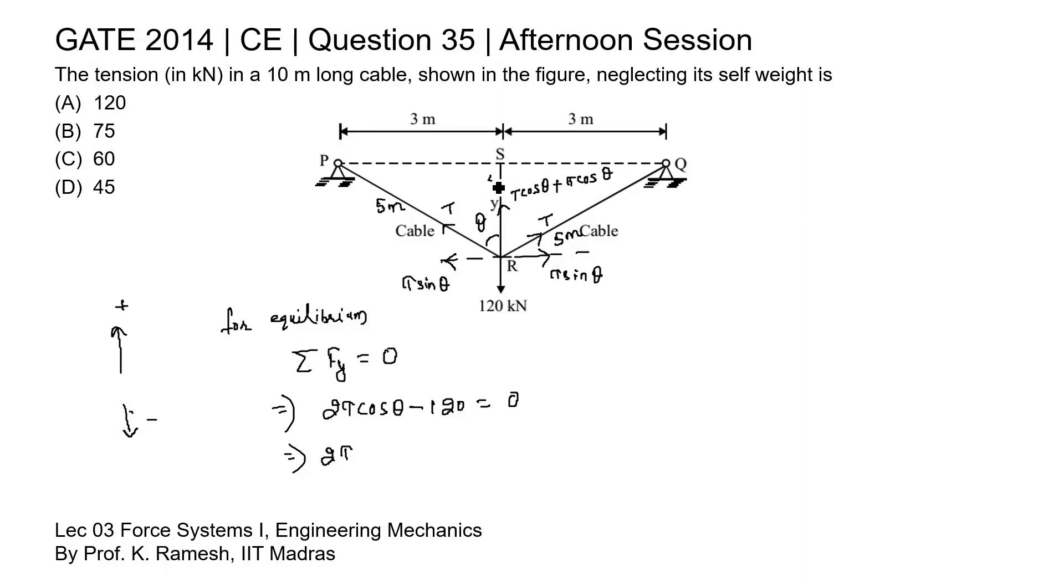this is 4 meter, SR the length of SR is 4 meter. Cos theta will be 4 by 5. Cos theta will be 4 by 5 and this is minus 120 equal to 0.